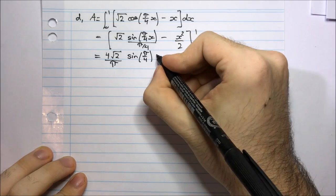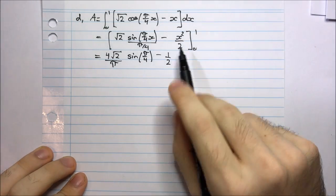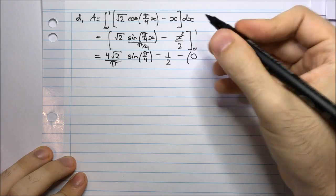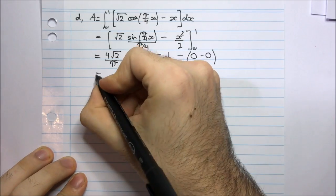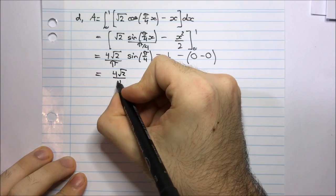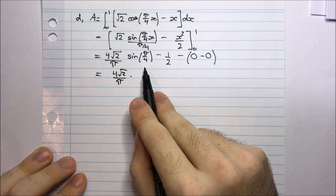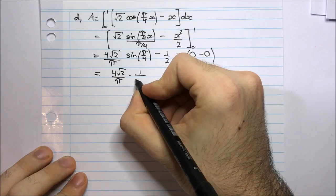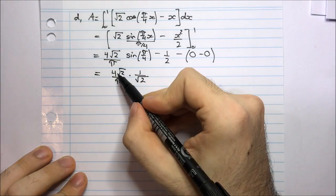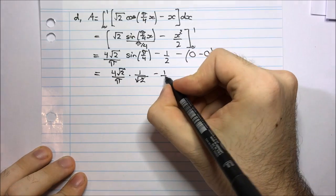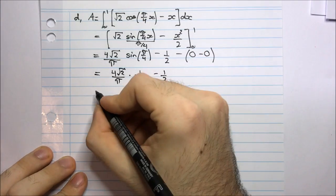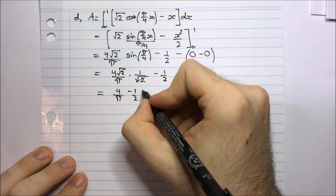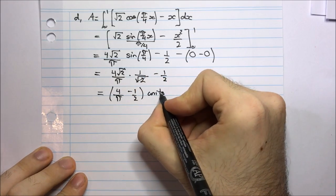Substituting the top limit first: that gives root 2 times 4/π times sine(π/4), minus one half. Substituting 0 into sine: sine of 0 is 0, and 0 squared is 0. So I have (4√2)/π multiplied by sine(π/4). Now π/4 is 45°, so sine 45 is root 2 on 2 — or 1 on root 2. Writing it as 1/√2 allows easy cancellation. So I'm left with 4/π minus one half.